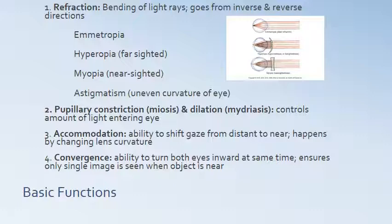The constriction and dilation of the pupil controls the amount of light that enters the eye. Accommodation is the ability to shift our gaze from distance to near by changing the lens curvature, and that should happen without delay. Convergence is where we look at a pencil coming toward our nose and turn our eyes toward it as it gets closer, ensuring only one single image is seen and not double vision.